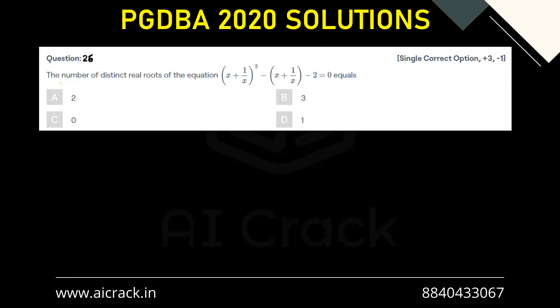Hi everyone, let's solve question number 26. The number of distinct real roots of the equation (x + 1/x)² - (x + 1/x) - 2 = 0. So this is a very standard problem of quadratic.